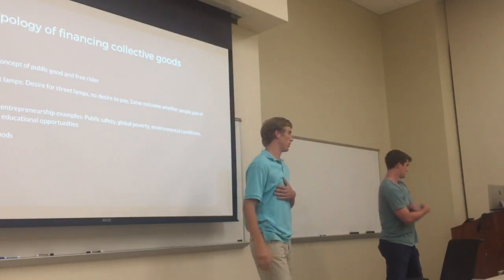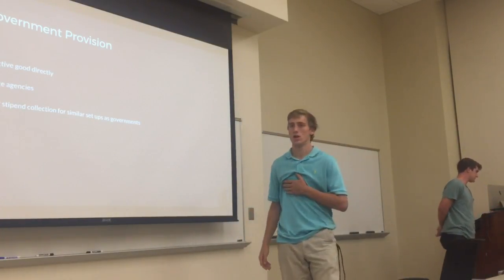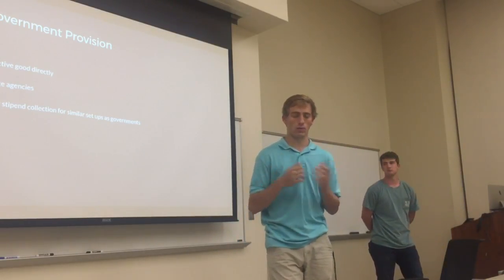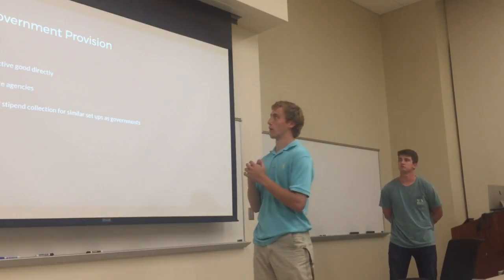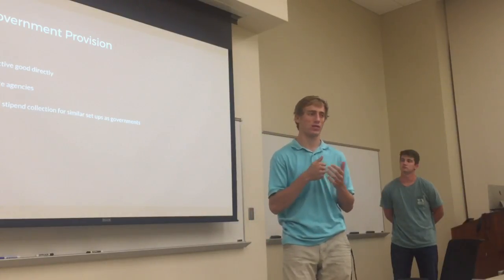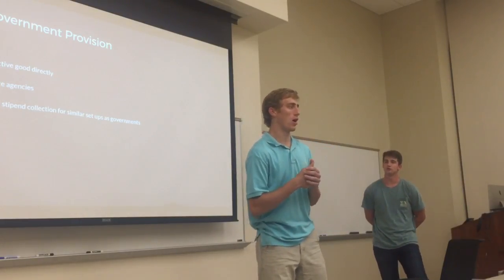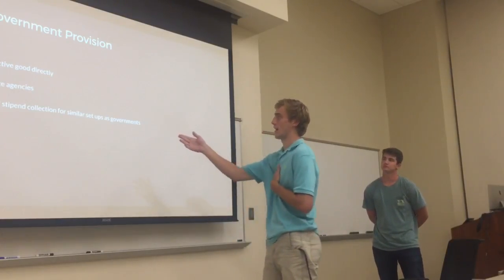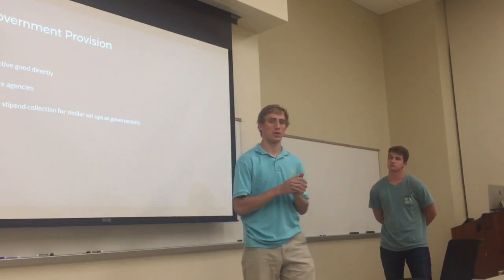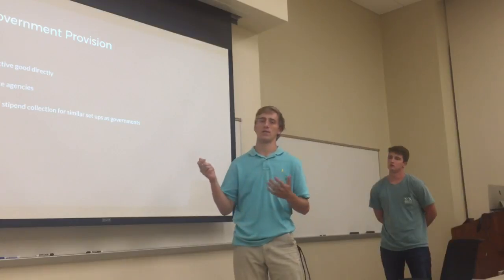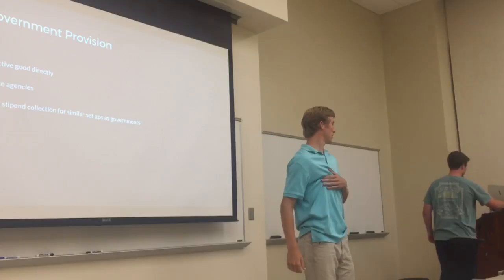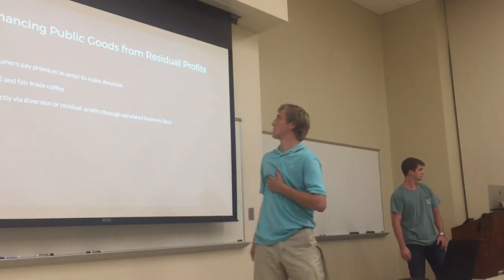People want these benefits but others aren't willing to pay for them, yet they still reap the reward. We're going to look at three methods. The first is government provisions — this is how you get around free riders. Government provisions involve receiving directly from the government: a tax or stipend collected that sets up a payment system for the public good. There are also private agencies that do the same thing — parks, healthcare, education.